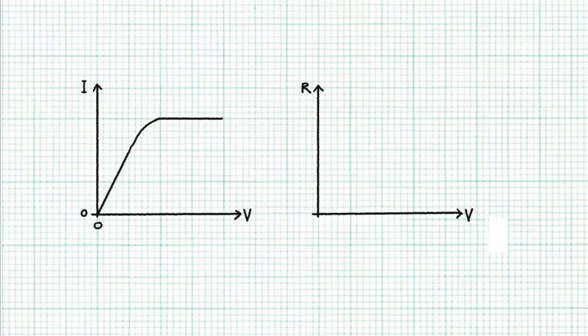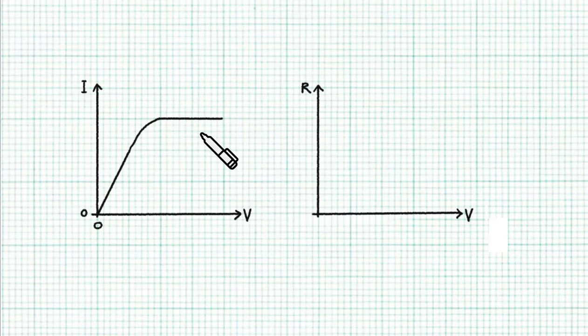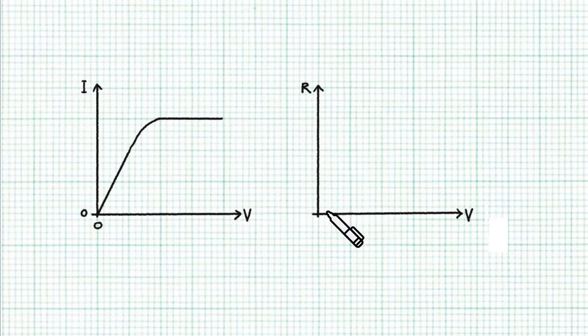Hello, welcome to another episode of XM Puzzle. You are given the I-V characteristic graph of this mysterious component. Can you sketch for me the R-V graph — the resistance of this component at various operating voltages?